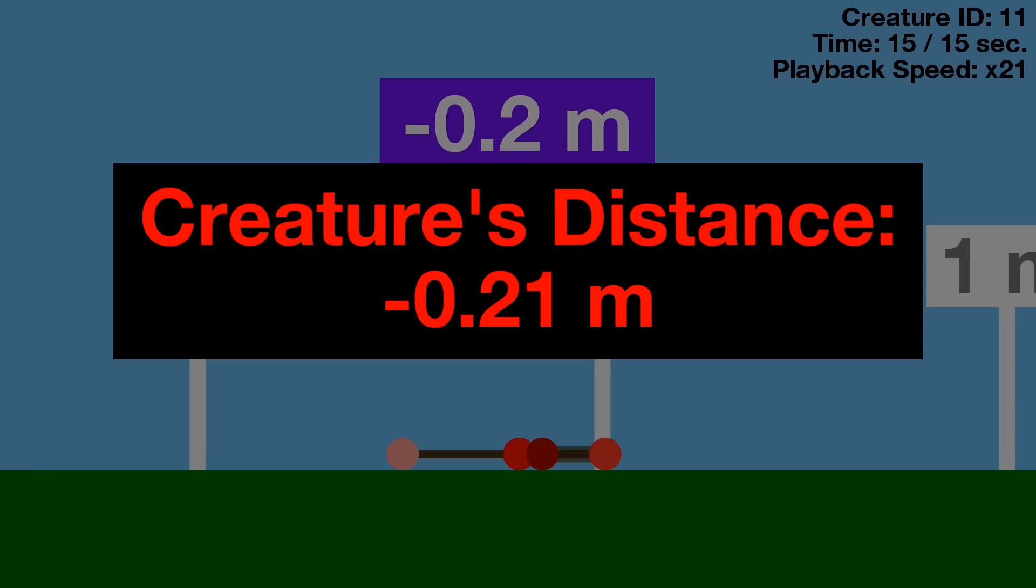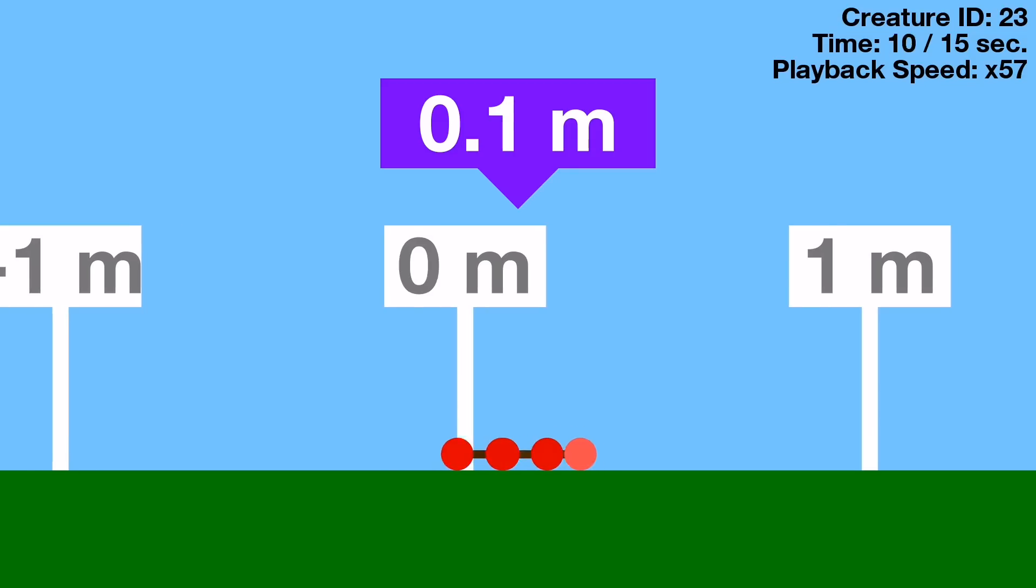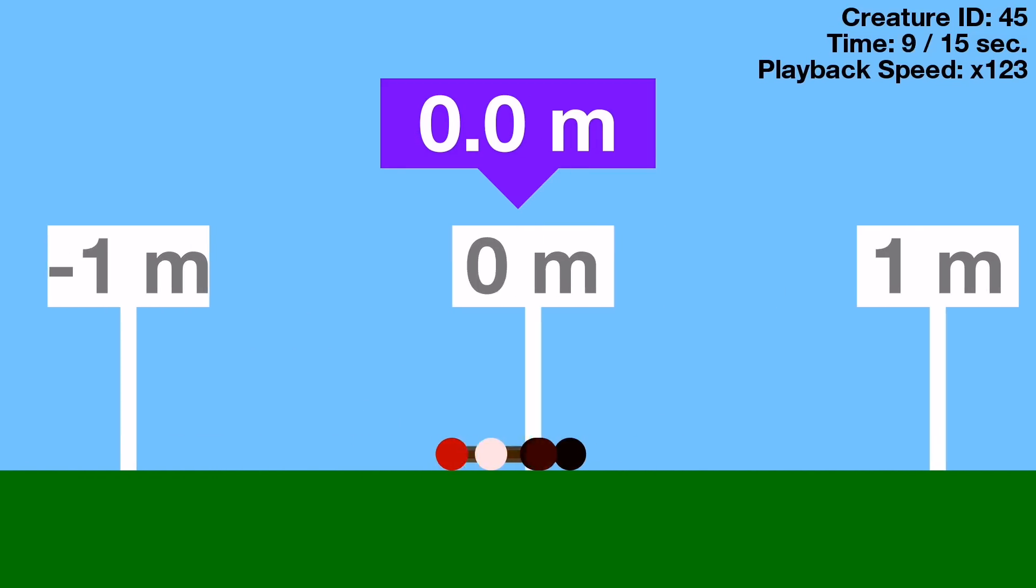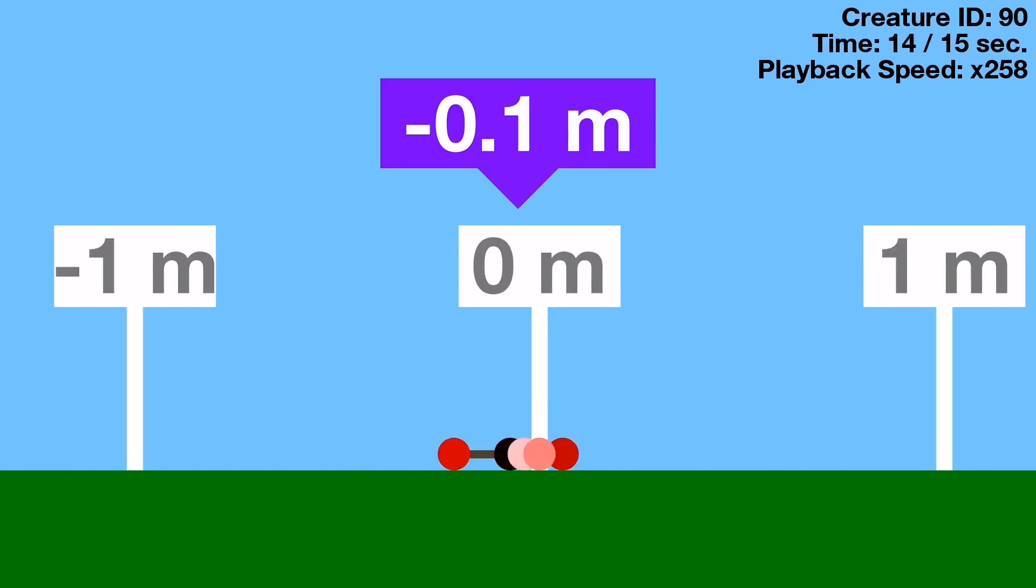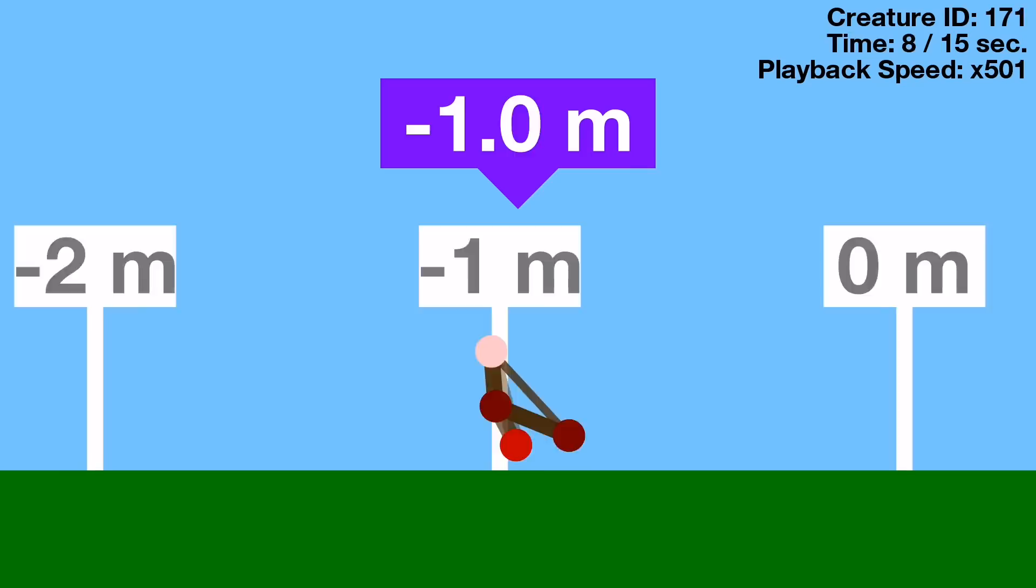Oh, I forgot to mention that a creature's position is determined by the average position of their nodes. So a creature can't just fling one of its nodes really far forward and get an unfair advantage that way. Now we've seen 10% of the creatures, but don't worry, it's going to speed up really fast from here.